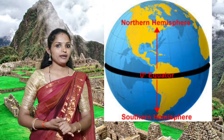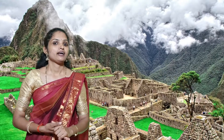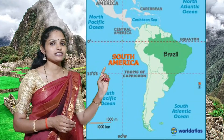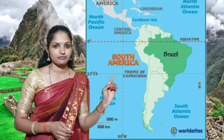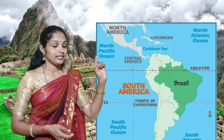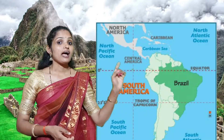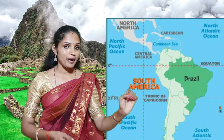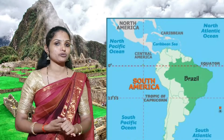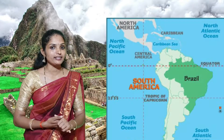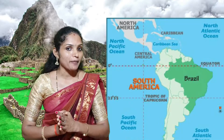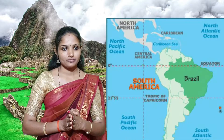Also, the important latitudes that pass through this continent - can you say which they are? Yes. The Equator and Tropic of Capricorn are the two important latitudes that pass through South America.